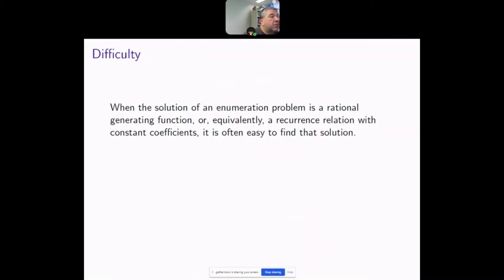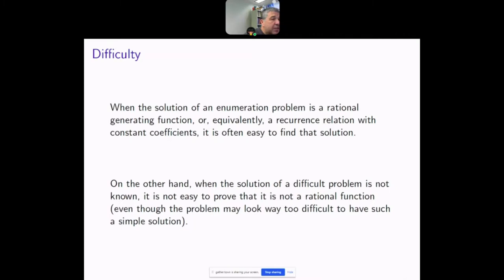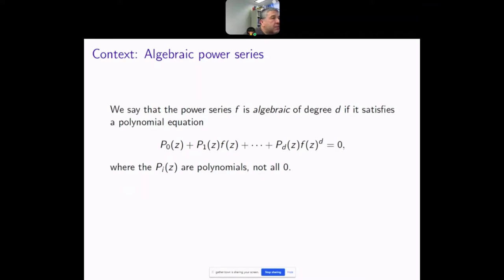If a problem has a rational generating function as a solution, it's often easy to find it; but it's much harder to prove that one doesn't exist when one doesn't. I will talk about a method to prove such a negative result.